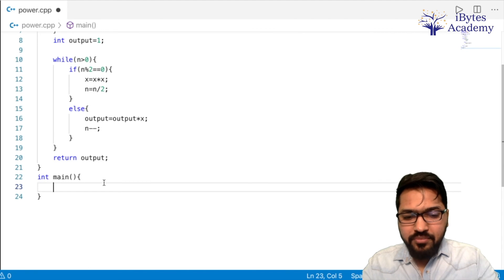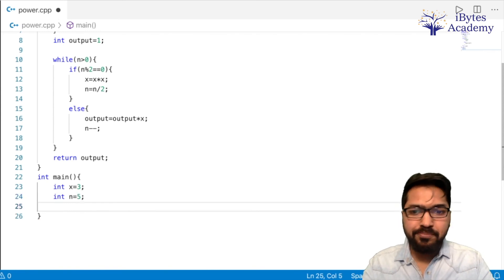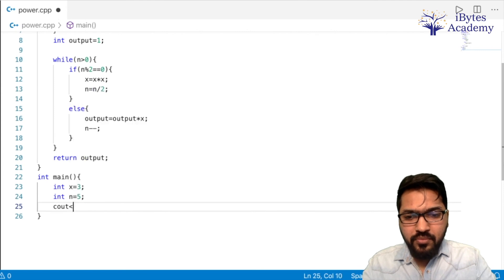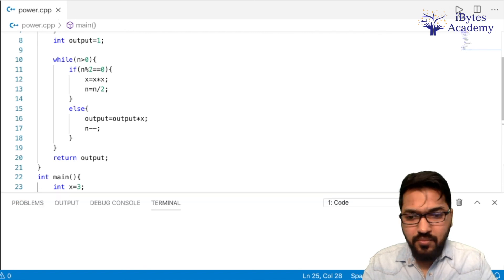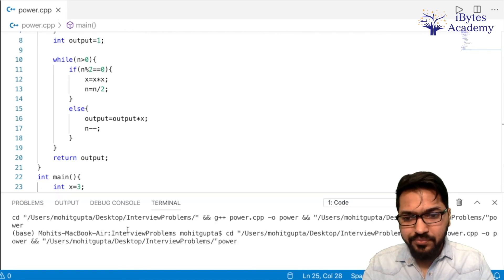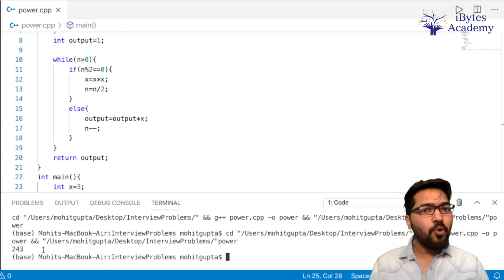Now let's check if this works fine. So let's take int x is equal to 3. And let's take int n is equal to 5. So our answer should be 243. So cout power x, n endl. So we are getting 243 which is correct. So I hope this problem is clear. And if you have any doubts do mention it in the comments. I will be ready to help. And I will see you in the next video with some another interesting problem. Thank you.